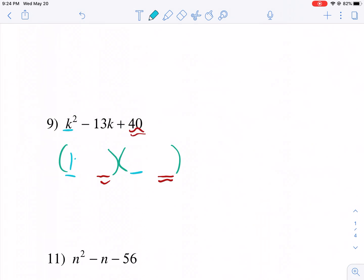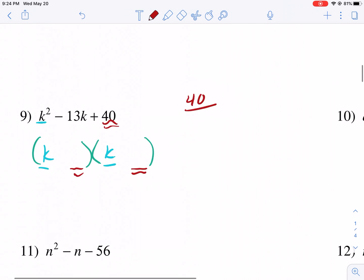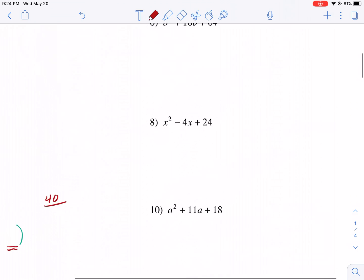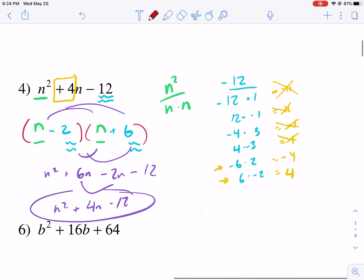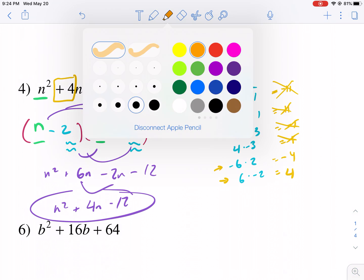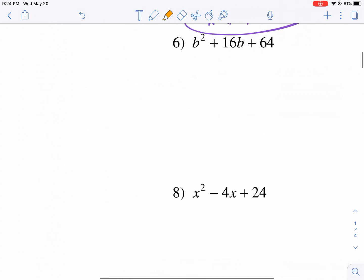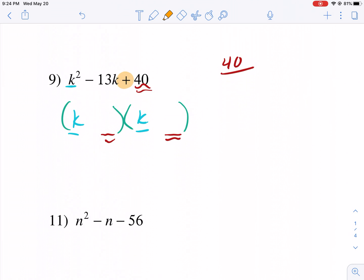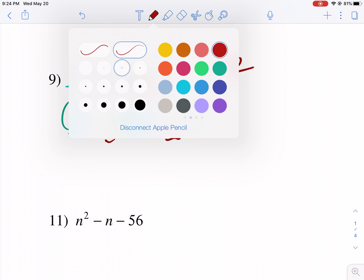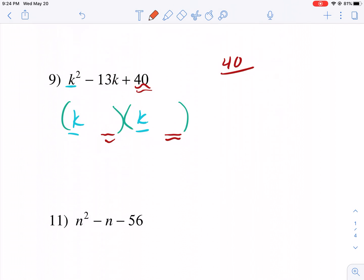So we're thinking of factors of k squared. Obviously just k and k. 40 is going to be a little bit daunting because we need to get a positive 40. Now here's the thing. Here I had a clue that there's certain patterns that you see. If this is negative that means that one of the signs must be positive and one must be negative. Obviously because you have to have a positive times a negative. Here we have a positive. So that means both signs need to match. It's either going to be positive times positive or negative times negative. But the middle term is negative. So what does that mean? If the middle term is negative, that means both of these signs must be negative. I'll explain what I mean.